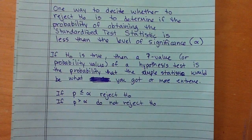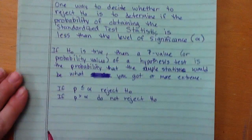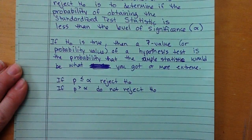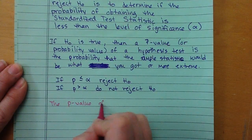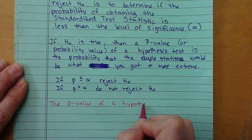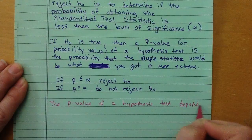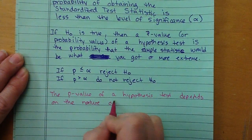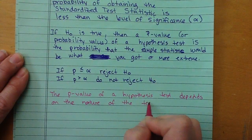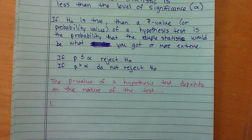The value for the p-value we will learn how to find in the next section, but it depends on the nature of the test. The p-value of a hypothesis test depends on the nature of the test. There are only three types of hypothesis sets that we could have.